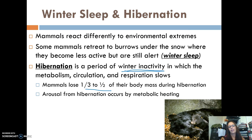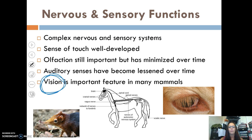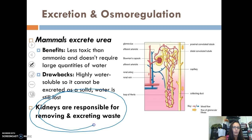When mammals do winter sleep, they're not quite in hibernation — they're still alert but become less active. For nervous and sensory functions, mammals have very complex systems and a highly sensitive sense of touch. Olfaction (smell) is still important but has been minimized over time, and auditory senses have also become lessened. Vision, however, remains an important feature in many mammals. For excretion, mammals excrete urea, which is less toxic than ammonia and doesn't require large quantities of water, but it is highly water soluble and cannot be excreted as a solid, so water is still lost. The kidneys are the important organ responsible for this.